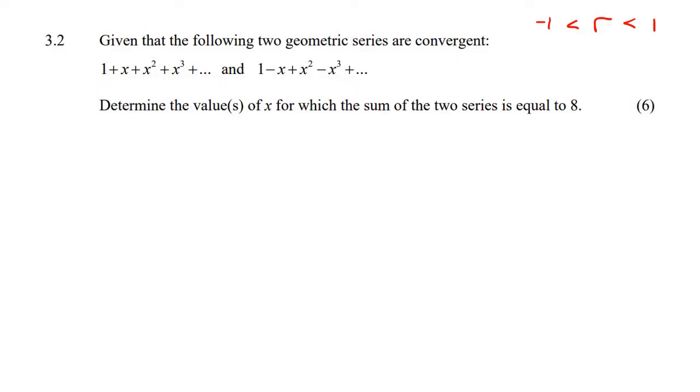So it says, determine the value, or values, of x for which the sum of the two series is equal to 8. Now, that's a bit misleading. What do they mean? Do they mean that this one's sum is equal to 8, and this one's sum is equal to 8, or do they mean that we should plus both of these together, and that's equal to 8?